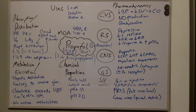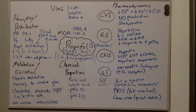Hello, welcome to this short talk on propofol. Propofol is prepared as a 1 or 2% white lipid-water emulsion. It comes in vials of 20, 50, or 100 mils. The chemical name for propofol is 2,6-diisopropylphenol.